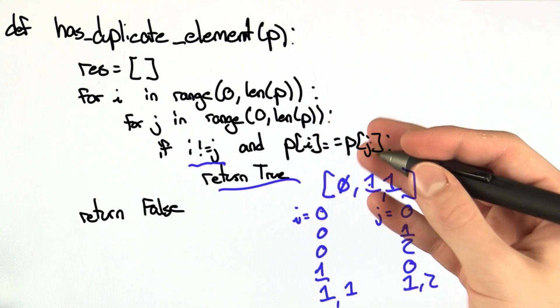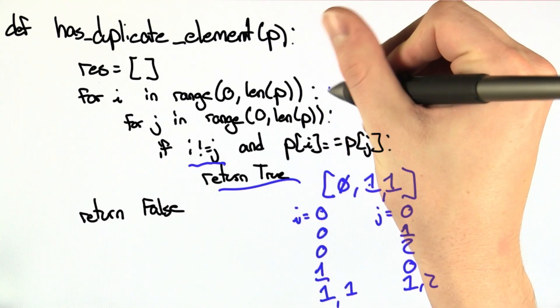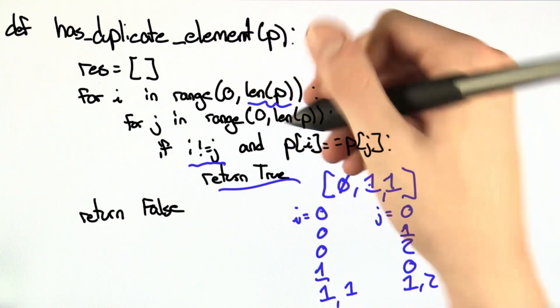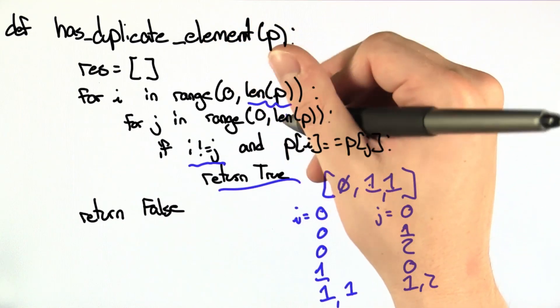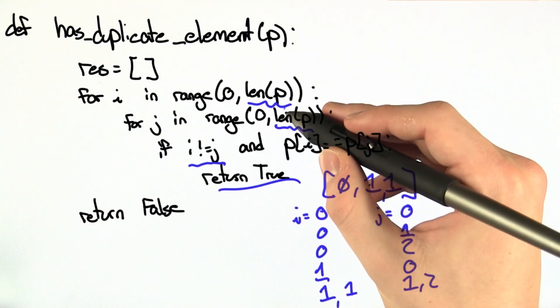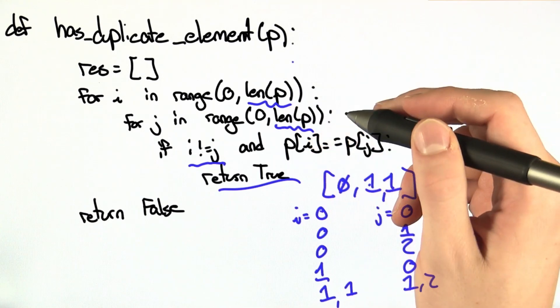Now, in order to examine the runtime, the key part here are these two for loops. For this for loop, we're going to go roughly the length of p, and for every element in p, we're also going to go roughly the length of p. This creates a quadratic runtime in relation to the number of elements in p.